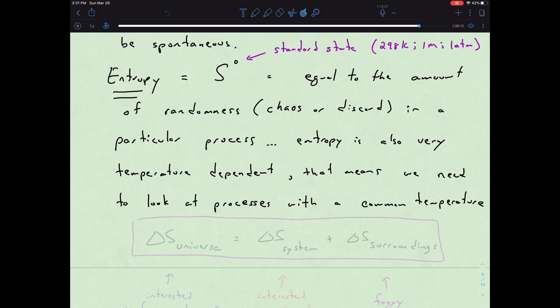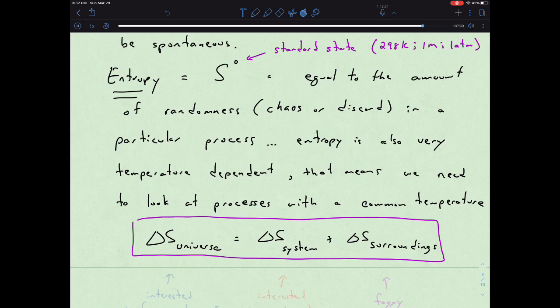So there are a couple of equations that we have to then understand. As far as what is this delta S of the universe, how can we relate it to processes, whether they be reaction processes or phase change processes? And so the equation that we look to, at least in the beginning, is this: the delta S of the universe is equal to the delta S of the system plus the delta S of the surroundings.